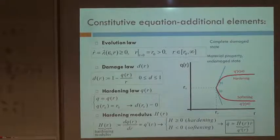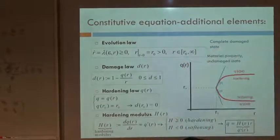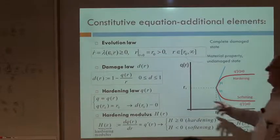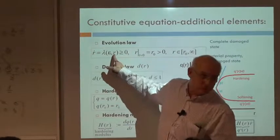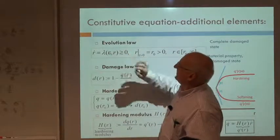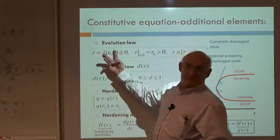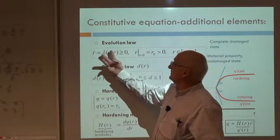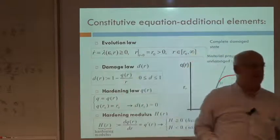So, some additional ingredients. I talk about an internal variable, and according to the general theory, whenever I define an internal variable, I have to talk about an evolution equation. So the evolution equation is that R-dot is going to be a function of lambda, and I impose that this lambda is always greater than zero.